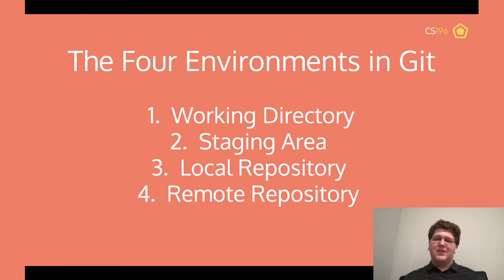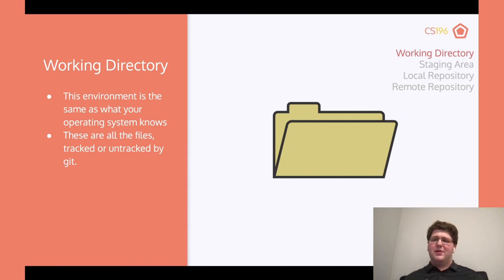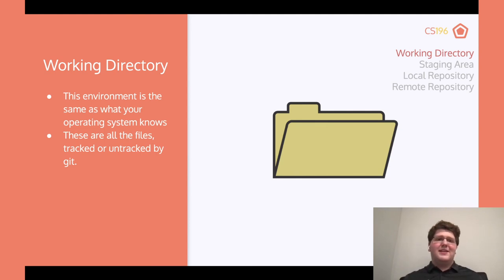Let's talk about the four environments in Git. You have the working directory, the staging area, the local repository, and the remote repository. The working directory is the same as what your operating system knows — just a folder on your computer with all the files in it. A repository typically contains all the files in the folder, but not always. A good example of when you wouldn't want something in your repository is a password file — you don't want to send that to GitHub and let everyone read it. So you leave that in the working directory but don't commit it.